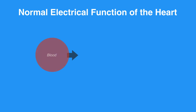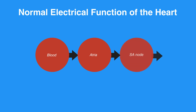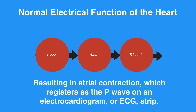When blood enters the atria of the heart, an electrical impulse sent from the SA node conducts through the atria, resulting in atrial contraction, which registers as the P wave on an electrocardiogram, or ECG, strip.